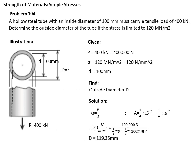So from direct substitution and calculation, we will have the diameter D, which is the minimum requirement as not to overstress the material since it is only limited to 120 MPa. The required outside diameter is 119.35 mm.